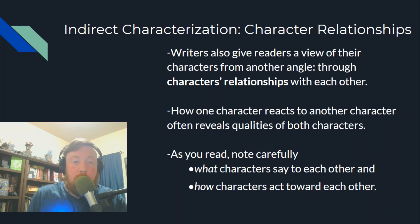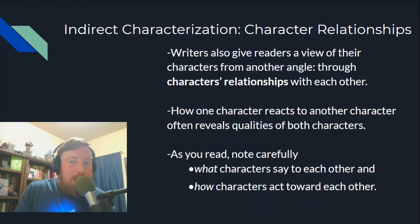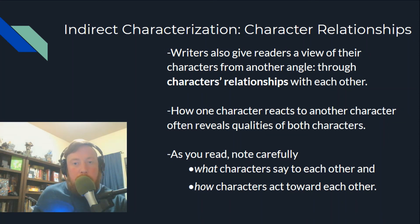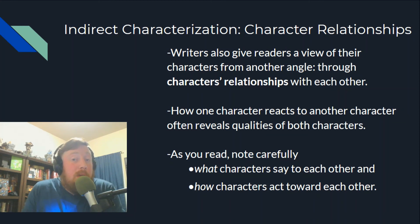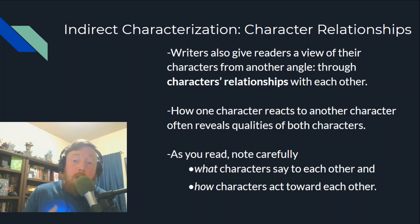The last type is relationships. With indirect characterization, writers use character relationships to give readers a view of their characters from another angle. How one character reacts to another often reveals qualities of both of them. We've talked about archetypes and characters acting as avatars for the reader — the author hopes you will pick up on those relationships and empathetically feel for that character. Ask yourself: what are characters saying to each other, and how are they acting toward one another?